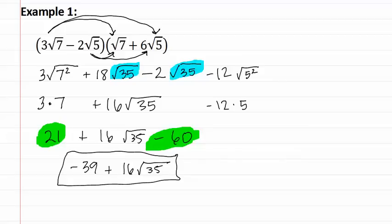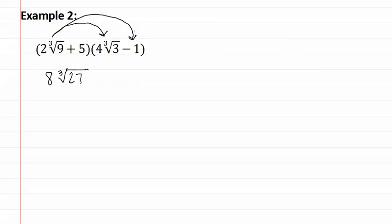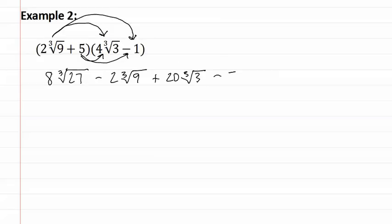Let's look at example two. Once again, let's begin by FOILing. The first becomes two times four is eight. The cube root of nine times the cube root of three is the cube root of twenty-seven. Next we do the outers: we have two times negative one is negative two, and the cube root of nine. Next we have five times four, which is twenty, cube root of three, and lastly we have negative five.